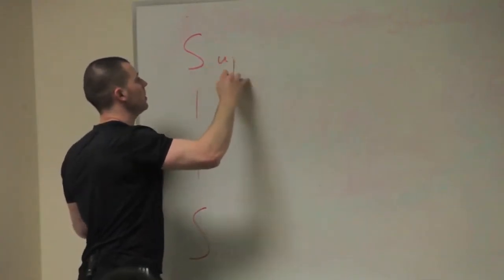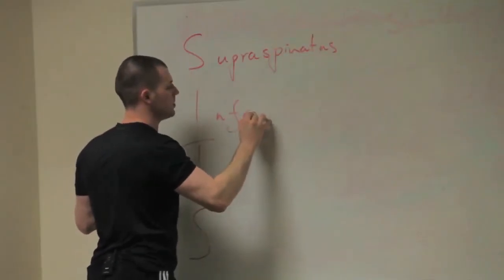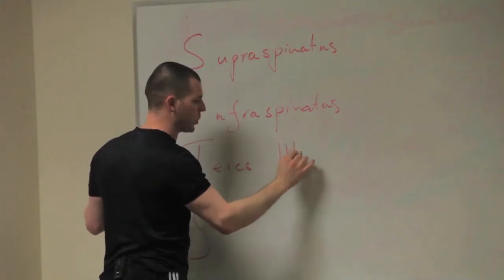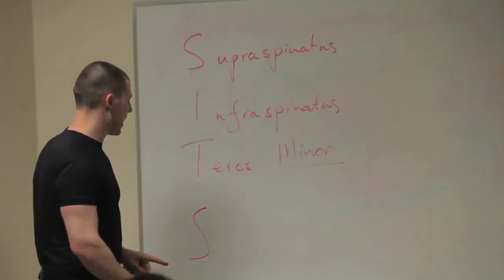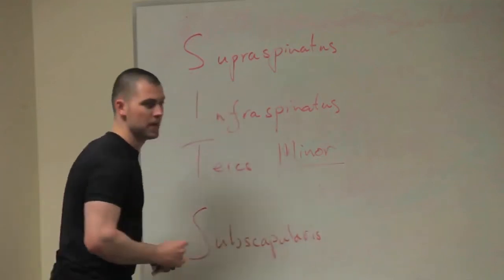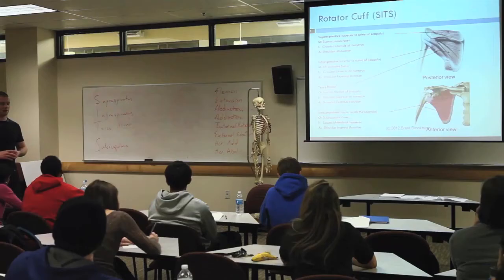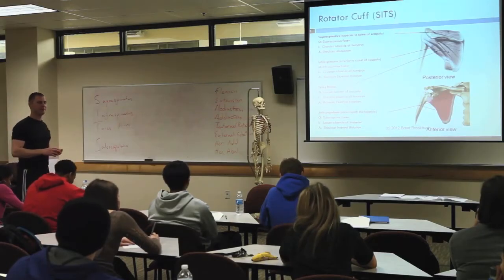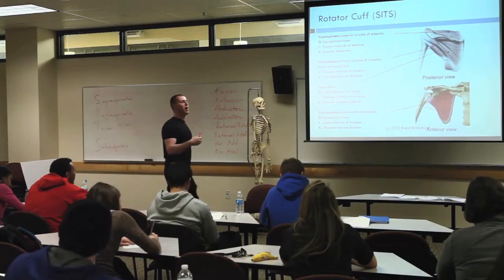First thing you got to remember, unfortunately, is the names: supraspinatus, infraspinatus, teres minor — make sure you know teres minor — subscapularis. Now I remember the first time I learned these muscles, the names kind of freaked me out. Supraspinatus sounds like a dinosaur, right? Maybe I took that a little too far, but nonetheless these names do tell you where the muscles are located.